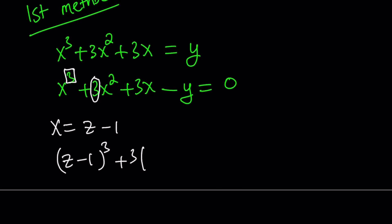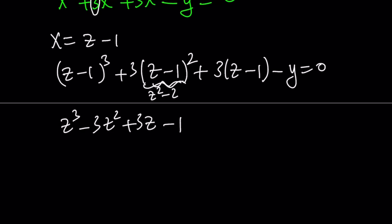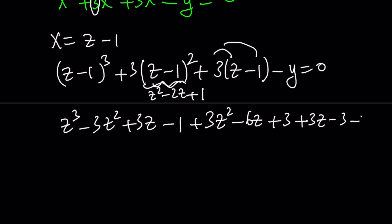Replace x everywhere with z minus 1 and expand. Normally we'd keep y on the right-hand side for the cubic formula, but we can handle this. So expanding: z cubed minus 3z squared plus 3z minus 1, plus 3 times z squared minus 2z plus 1, which becomes 3z squared minus 6z plus 3, then plus 3z minus 3 minus y equals 0. Notice that quite a few terms cancel out. z squared cancels, 3z plus 3z is 6z which cancels with negative 6z, and the constants 3 minus 3 is also 0.